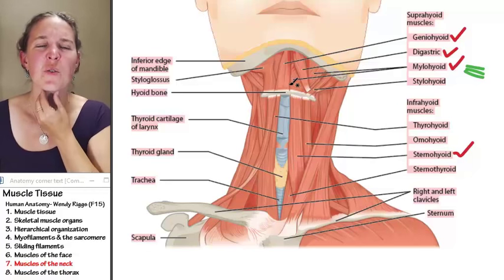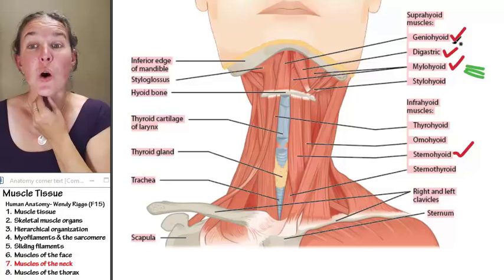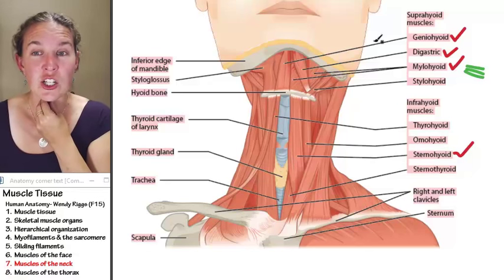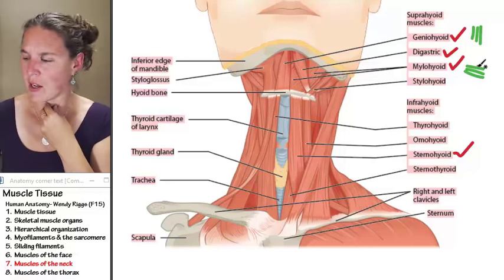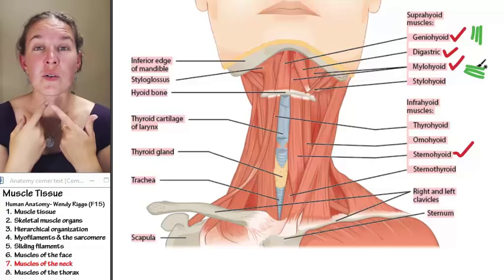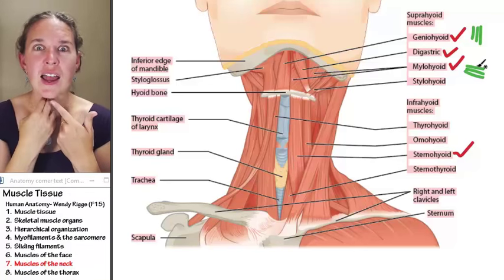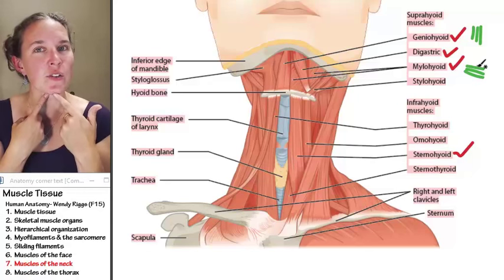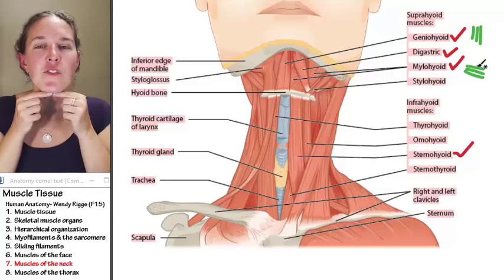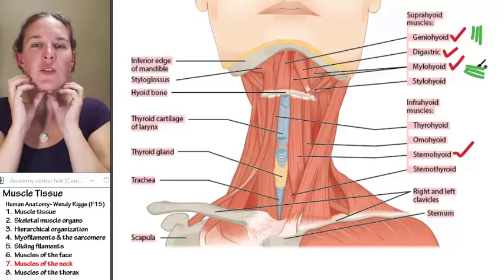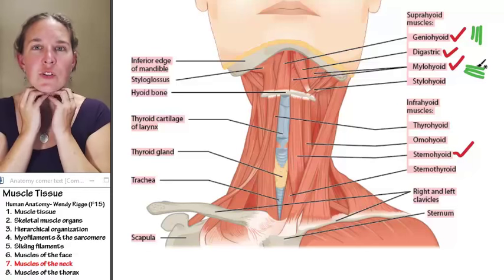You also have geniohyoid. Look at the direction of the fibers in geniohyoid — they go this way. "Genio" means chin, "hyoid" means hyoid. So the geniohyoid goes from the chin to the hyoid bone. If you shorten that muscle, you help move your tongue around and help masticate your food and swallow.